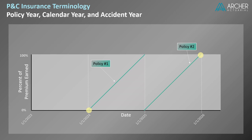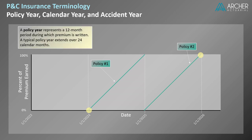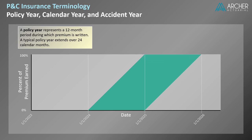This is an important insight and leads us to our definition of a policy year. A policy year represents a 12-month period during which premium is written. A typical policy year extends over 24 calendar months. Now, let's consider an insurance company that writes hundreds of policies throughout calendar year 2024. They would be represented in our diagram with a parallelogram like this one. This area represents the earned premium related to policies written in calendar year 2024.